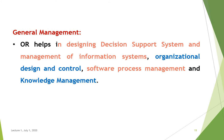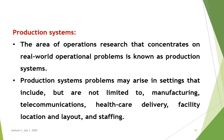General management. OR helps in designing decision support systems and management of information systems, organizational design and control, software process management, and knowledge management. Once you have raw material and industry, then the production system comes. The area of operations research that concentrates on real-world operational problems is known as the production system. Production system problems may arise in settings that include manufacturing, telecommunication, healthcare delivery, facility location and layout, and staffing.